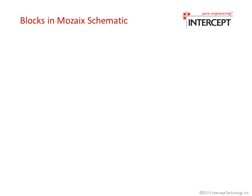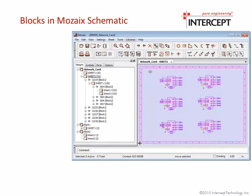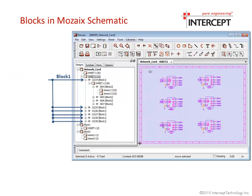Designers and engineers can also take advantage of block technology in the Mosaic schematic. The design you see here is the logical pairing of the layout seen in the previous slide. Here, six traditional logical blocks are designated as having a physical geometry representation, along with the four blocks beneath those.